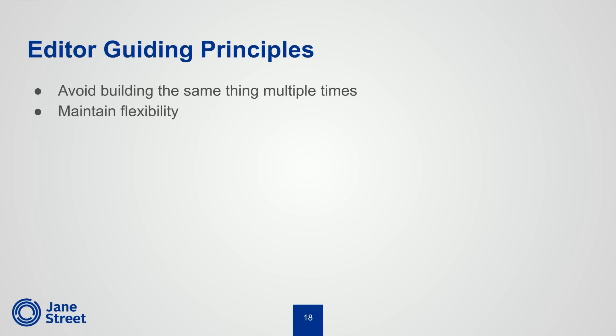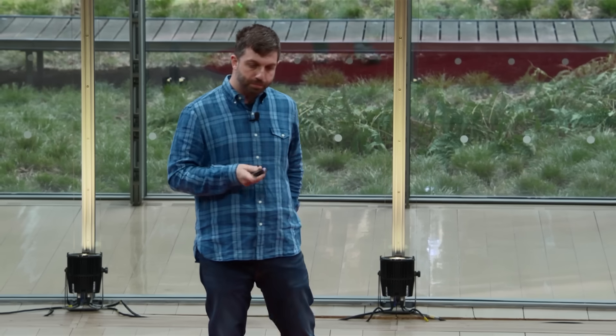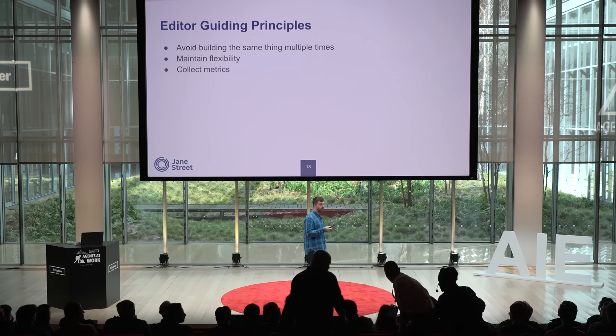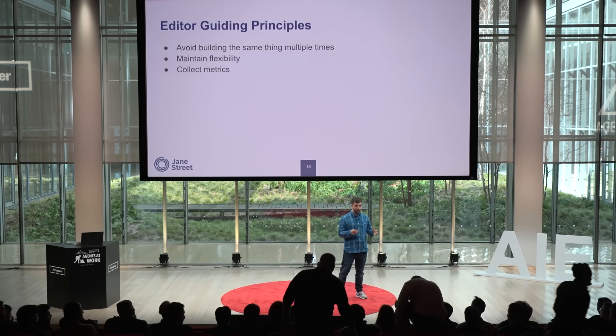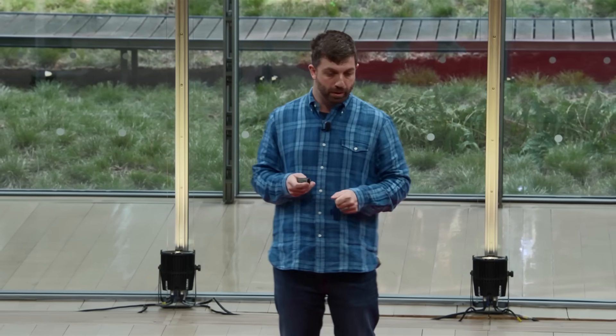The second idea was that we wanted to maintain flexibility. We had a model at the time that was not fine-tuned, and we were convinced a fine-tuned model was in our future. We wanted the ability to swap the model or swap the prompting strategy out. And lastly, we wanted to collect metrics — developers in their editors care about latency and whether the diffs actually apply, so we wanted real on-the-ground experience of whether the diffs were meaningful for people.